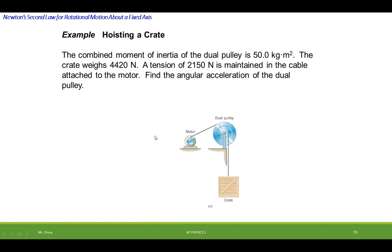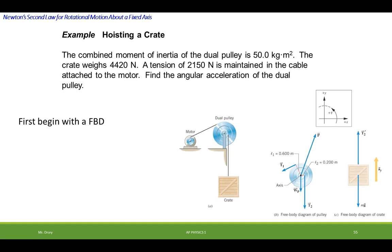So I want to try to identify a few things first. The first thing I'll do is draw a free body diagram, which is over here, and label some things. So T1 is a tension supplied by the motor. That's this right here. T2 is a tension to the crate.